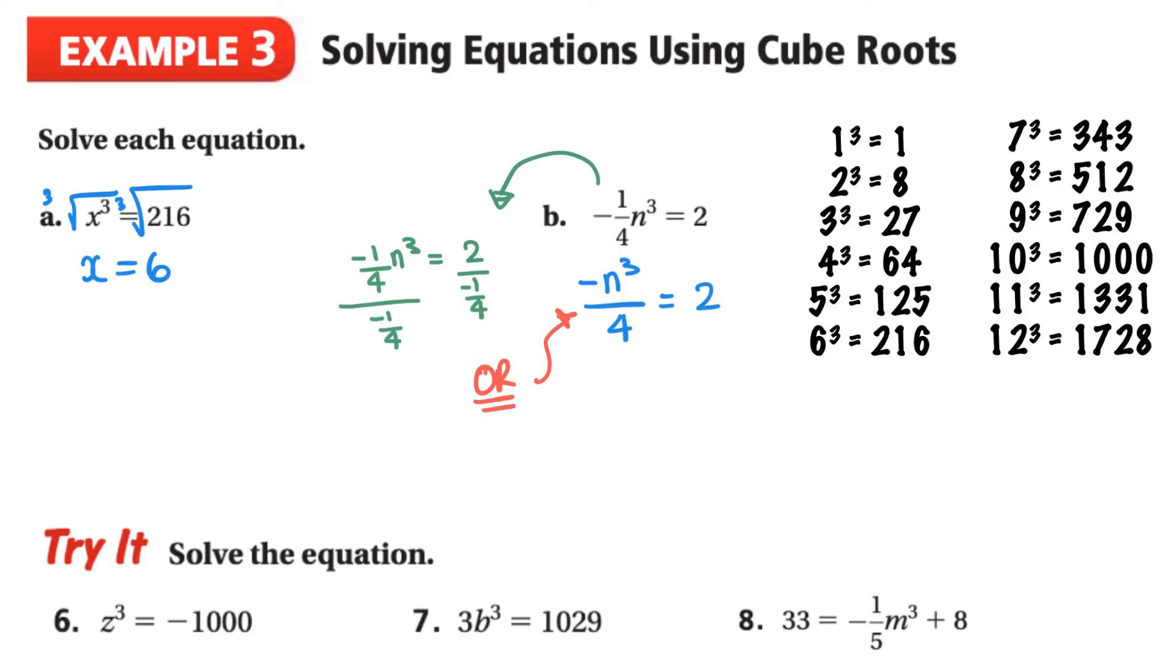Then I get negative n cubed is equal to 8. So I could have now n cubed is equal to negative 8, because if I divide both sides by negative 1. And then I'm looking at the cube root of both sides. And n is going to be, now looking at my chart, looking for 8, here it is. So 2 cubed is 8, so that means the cube root of negative 8 is going to be negative 2. So n is equal to negative 2.